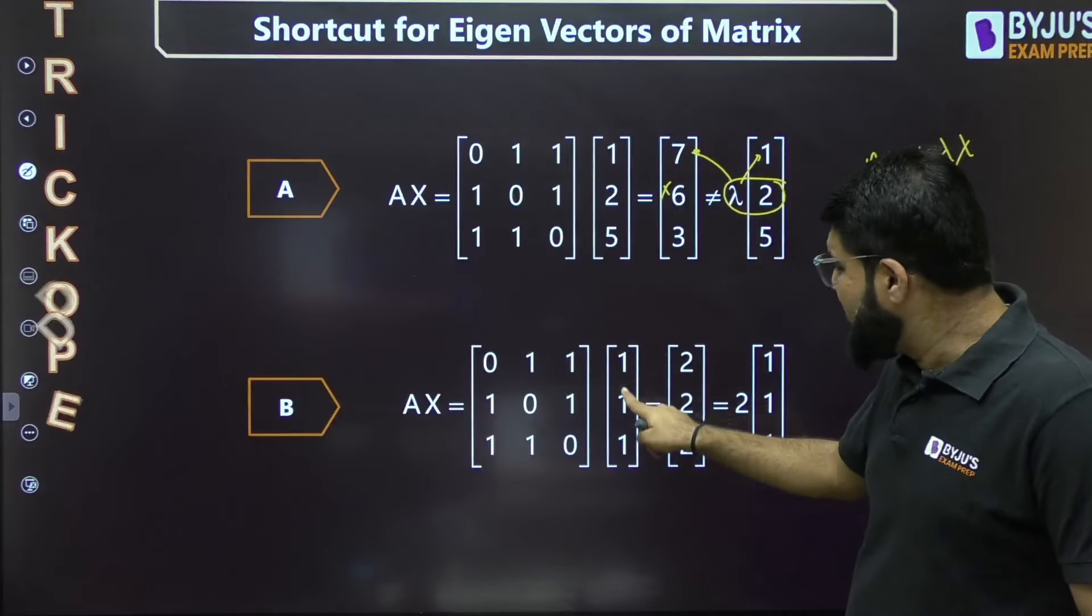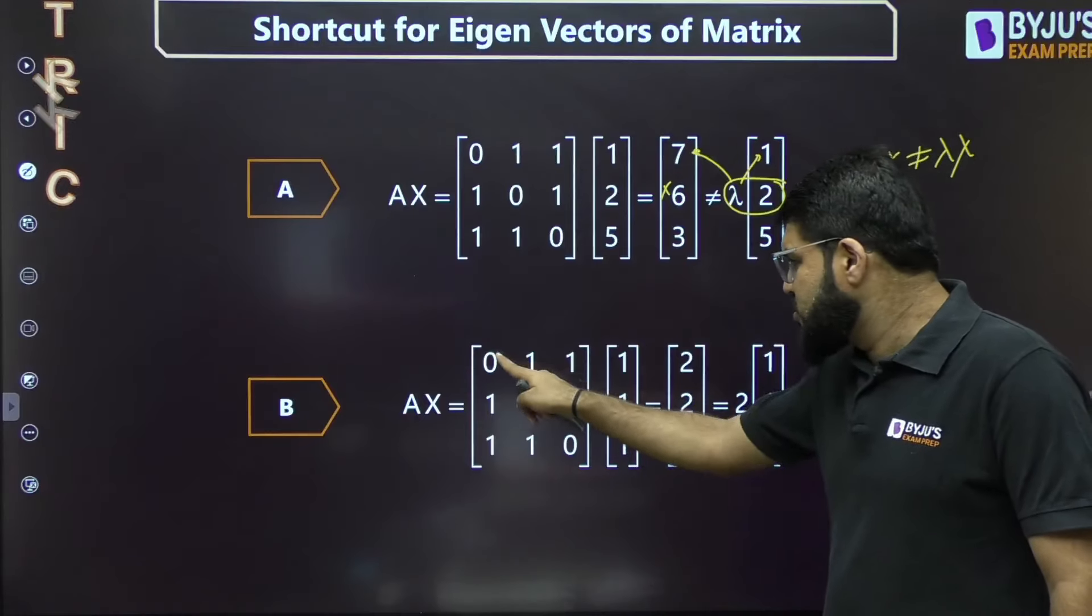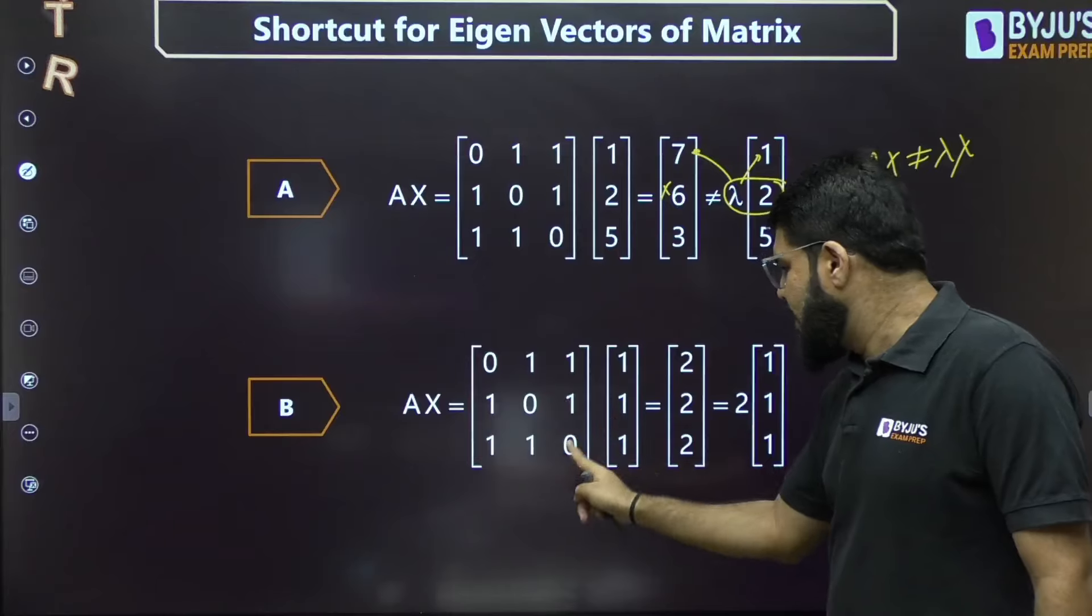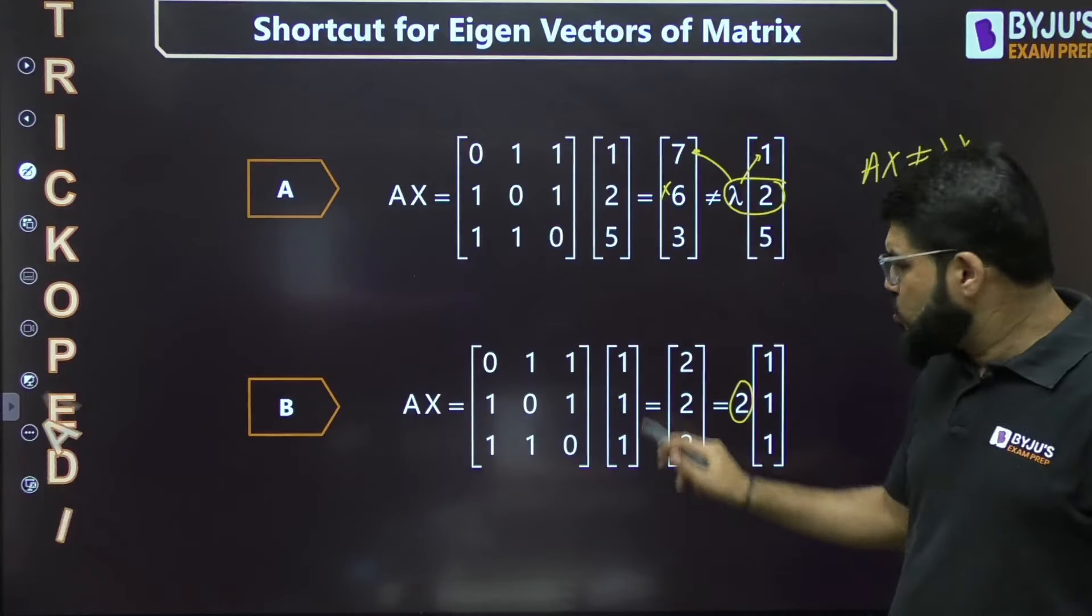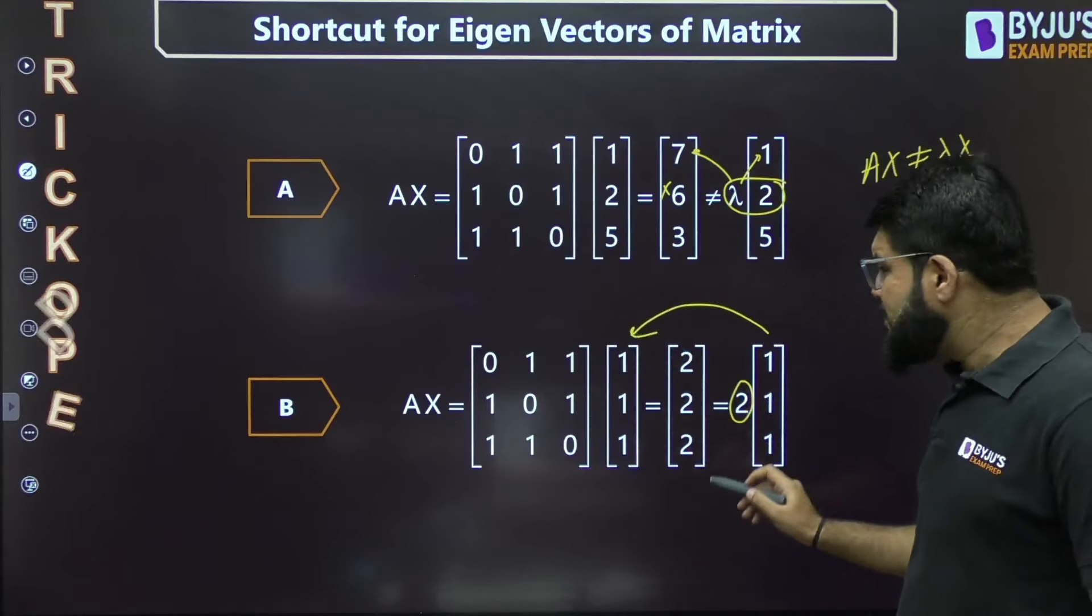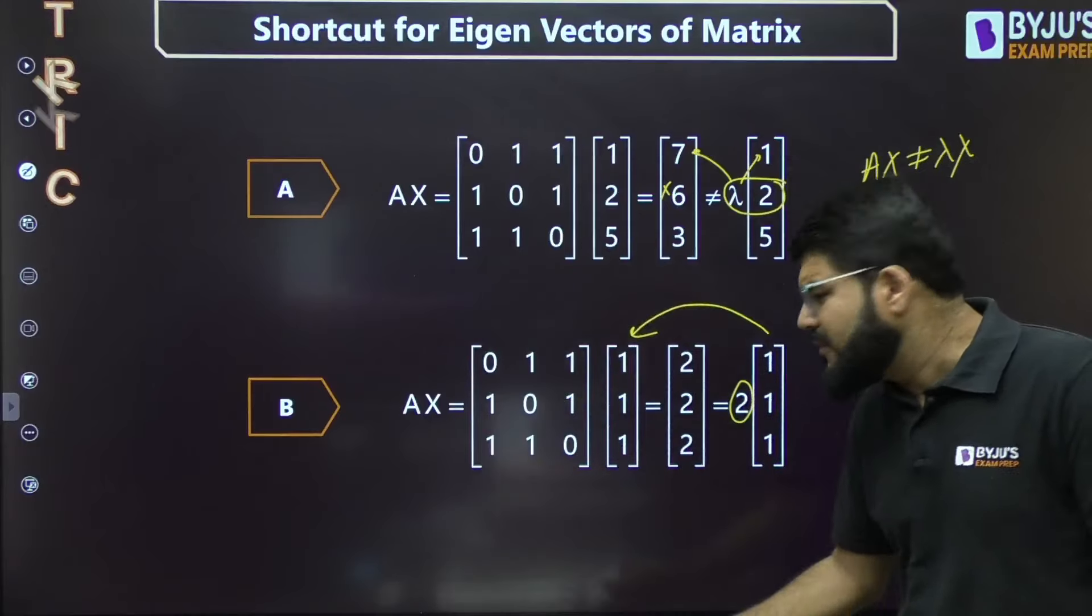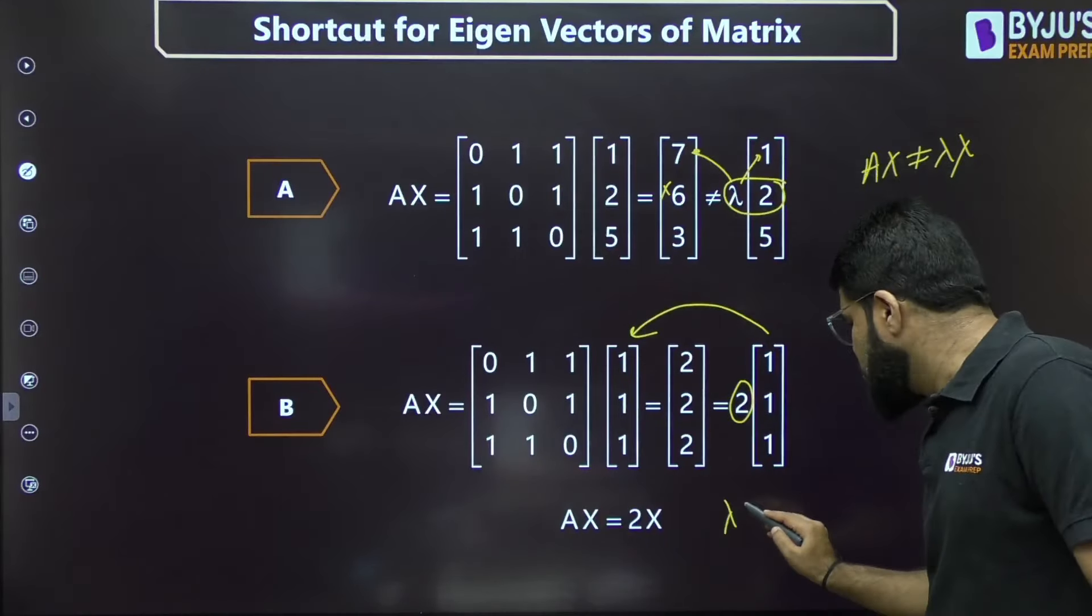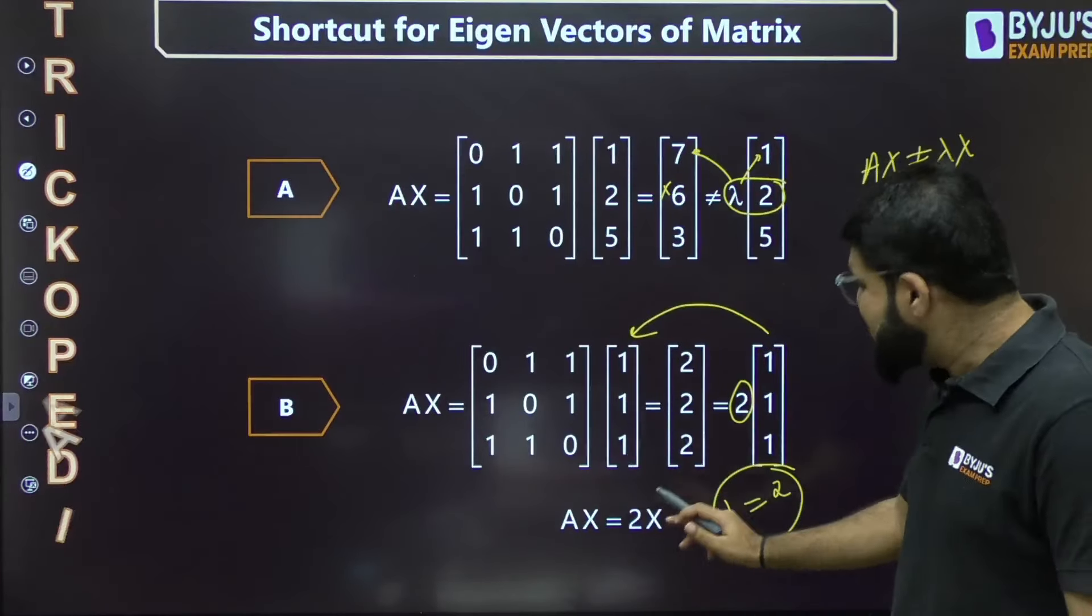Option B: vector [1, 1, 1]. Let's multiply: we get 2, 2, 2. I can take 2 common - when I take 2 common, I get [1, 1, 1], which is the given vector x. That means Ax gives us x again with proportionality number 2. Ax = λx is satisfied. This 2 is actually the eigenvalue, but I only want to identify the eigenvector.